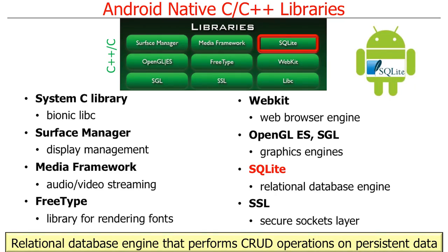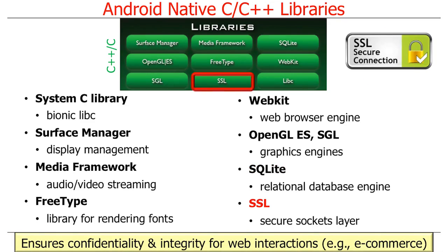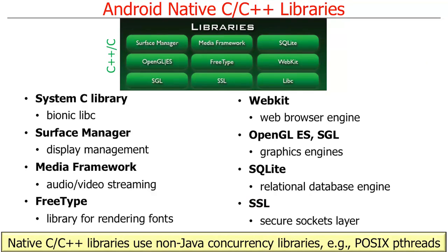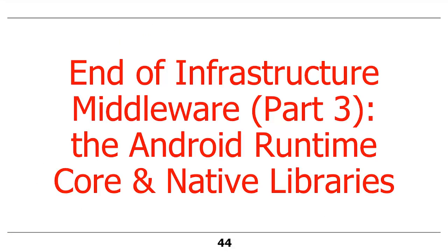SQLite is a relational database engine that performs so-called CRUD — create, read, update, and delete — operations on persistent data that lives across power failures and turning off the device. And finally, the Secure Socket Layer, or SSL, is used to ensure confidentiality and integrity for web interactions, commonly used for e-commerce interactions with web services running in the cloud. These native C and C++ libraries typically use non-Java concurrency libraries under the hood, such as POSIX pthreads. This is the end of part three of our lesson on Infrastructure Middleware, which focused on the core and native libraries provided in Android's runtime layer.